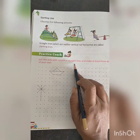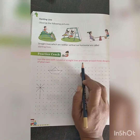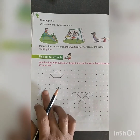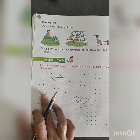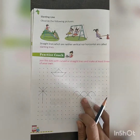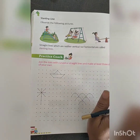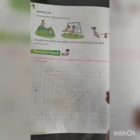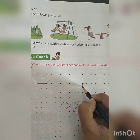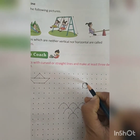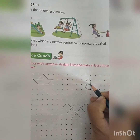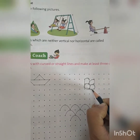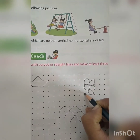Join the dots with curve and straight lines and make at least three designs of your own. अब देखो — आपको क्या करना है? यहाँ पे straight lines के parts से join करके एक design बनी है, curve lines से एक design बनी है, straight lines से एक design बनी. तो ऐसी कोई भी three designs आप बना सकते हो. Suppose मैं flower बनाती हूँ — आपको dots join करने हैं और designs बनानी हैं.